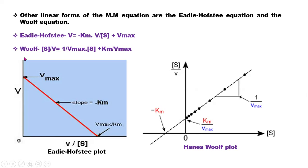The Hanes-Woolf equation is given by [S]/V = (1/Vmax) × [S] + Km/Vmax. Represented as a straight line y = mx + c: [S]/V is the y-axis, 1/Vmax is the slope, [S] is the x-axis, Km/Vmax is the positive y-intercept, and −Km is the negative x-intercept.